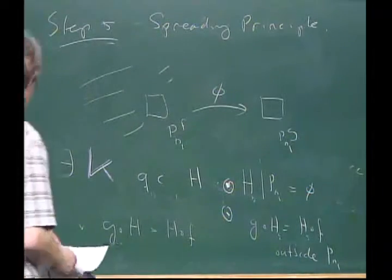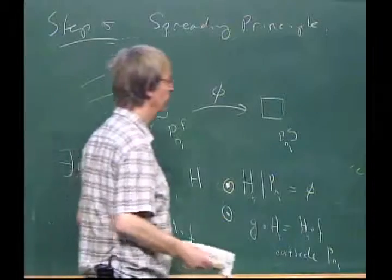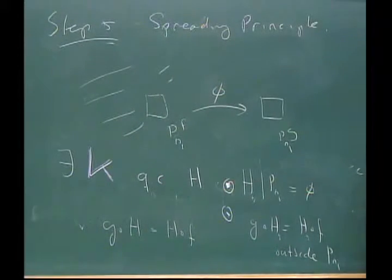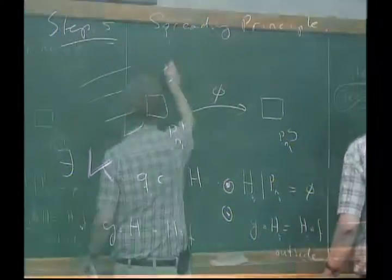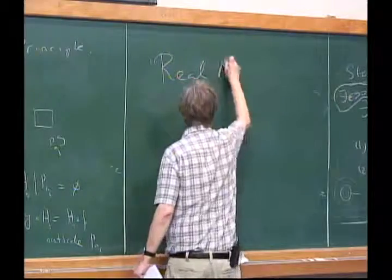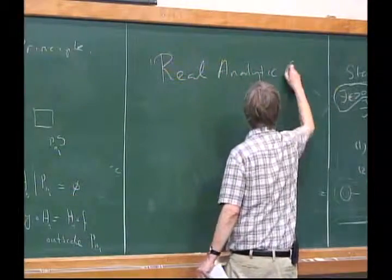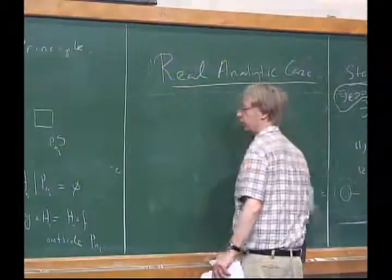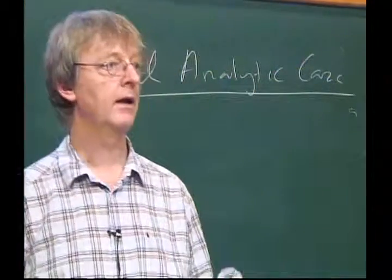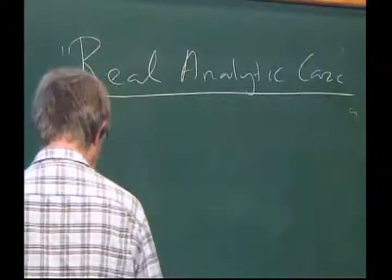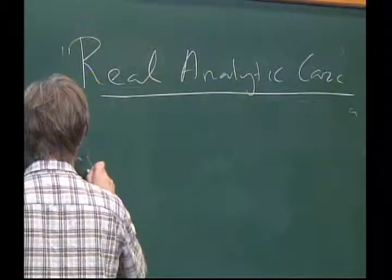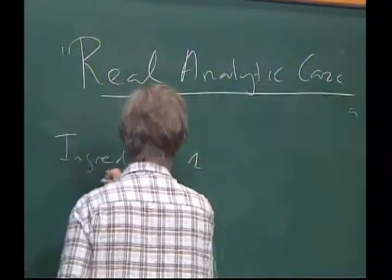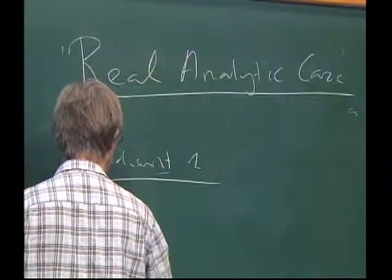That's in a nutshell the idea in the polynomial case. I'll now give some brief ideas for the real analytic case. In the real analytic case, my first obstacle is I don't have rays — I don't have a way of partitioning in the plane. This is ingredient one, which is what is called more abstractly complex bounds.